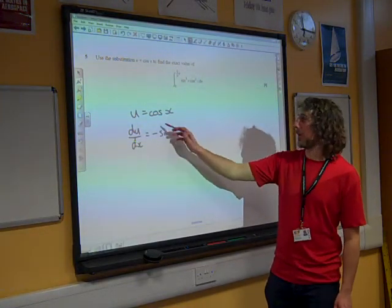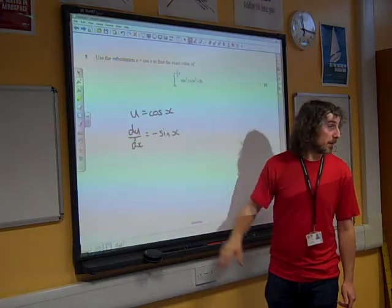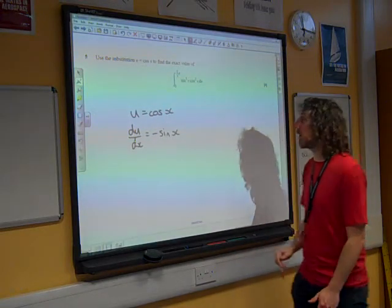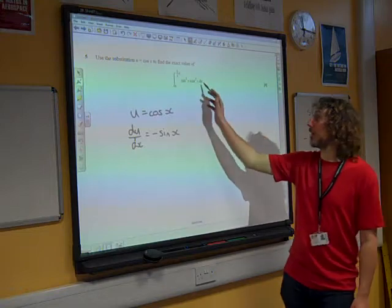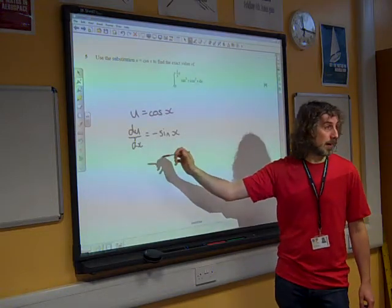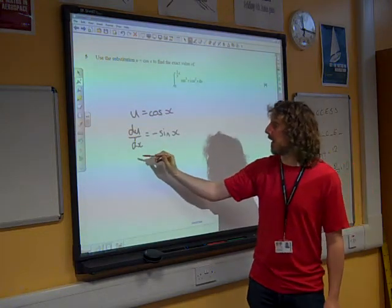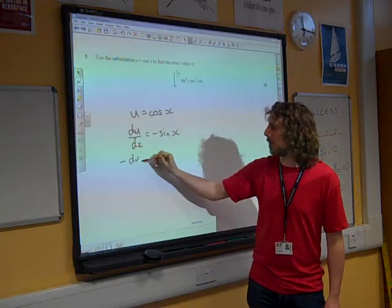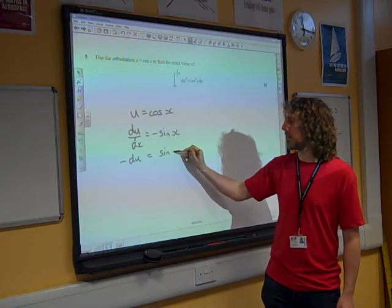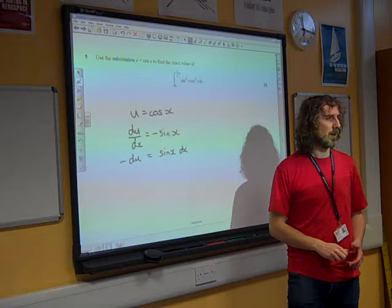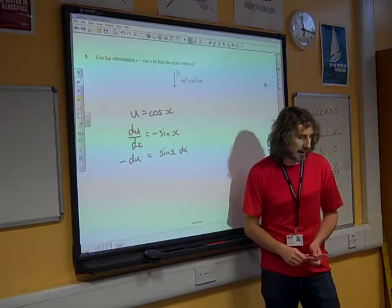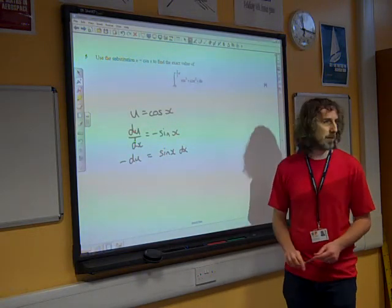Well done for not saying the other way. Right, so we've got that. We're going to do the substitution. What else have we got here? Well, we need to get rid of dx. So let's rearrange this slightly so that we recognize that this says, actually I'm going to write this as minus du is sin x dx.